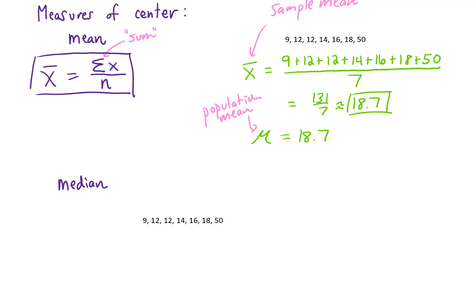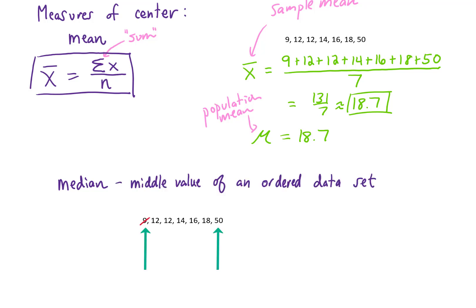If you have a set of data ordered from smallest value to largest value, the median is the literal physical center value of that set of data. If we want to find the middle value, we can just start crossing data values off from either side of the set until we get to the middle. The median of this set of data is then 14.